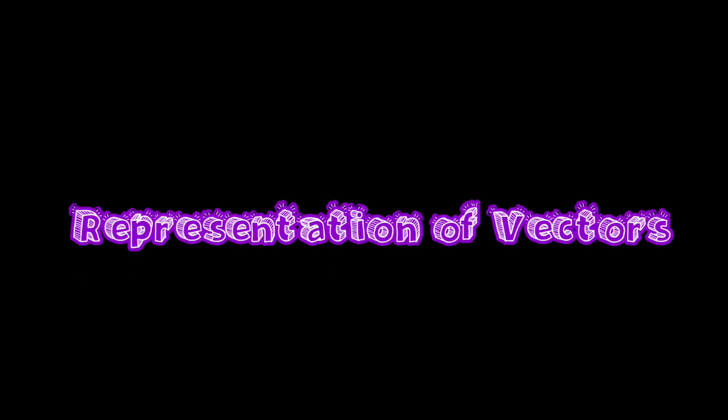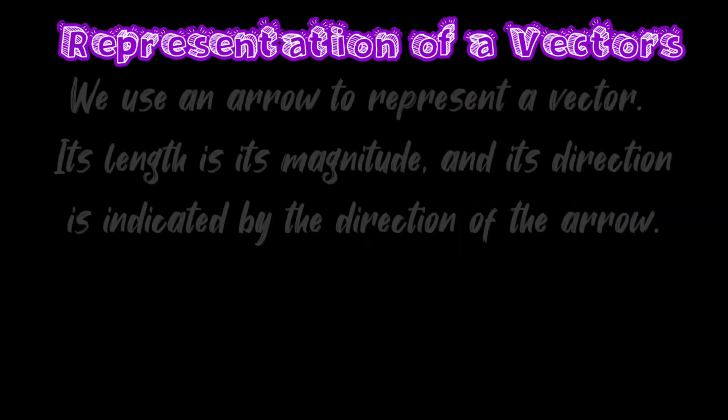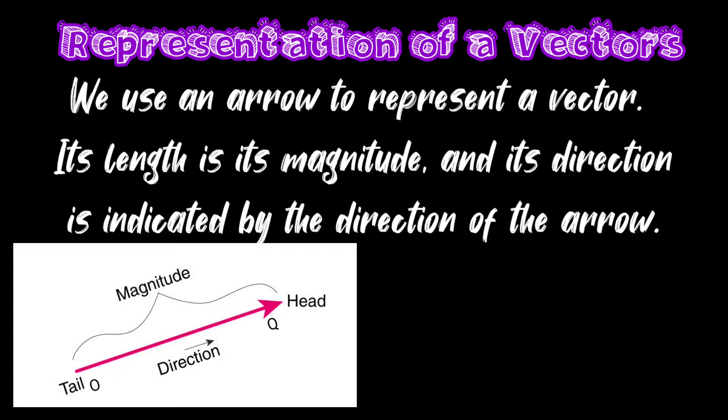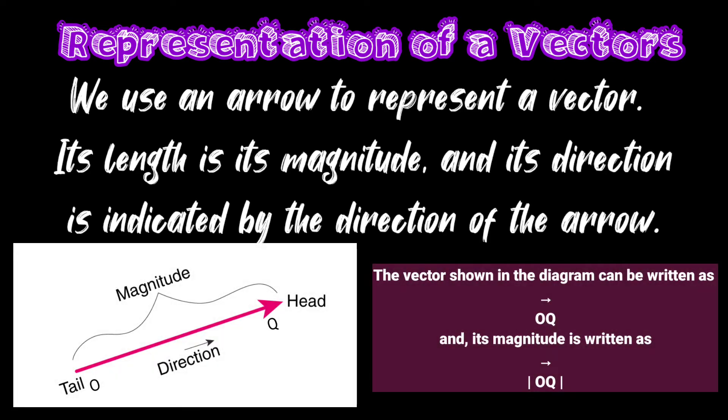Representation of vectors: we use an arrow to represent a vector. Its length is its magnitude, and its direction is indicated by the direction of the arrow. The vector shown in the diagram can be written as shown.